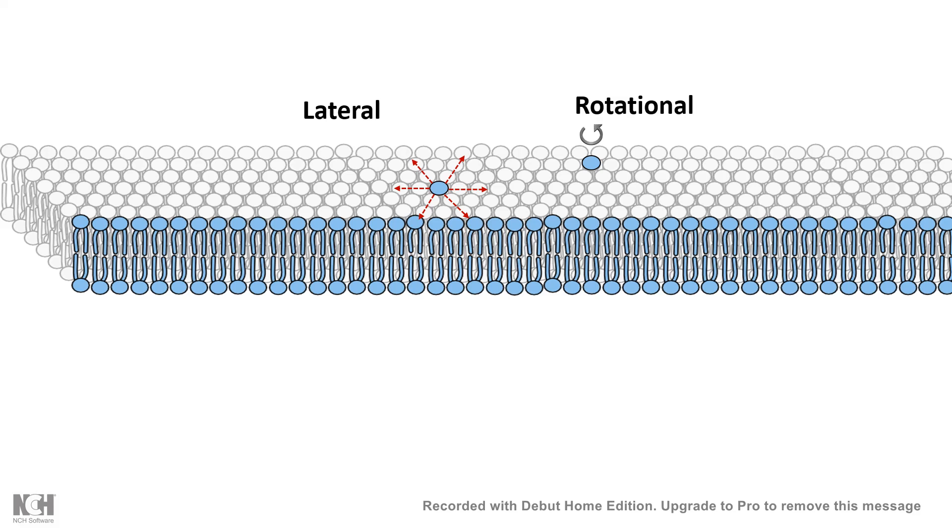Second, a particular lipid can rotate across a specific axis, giving a rotational motion. There could be trans bilayer flip-flop movement as well.